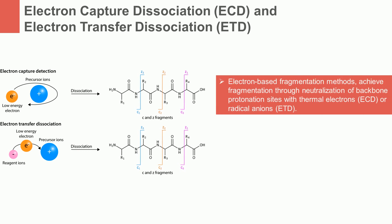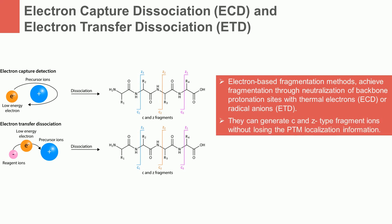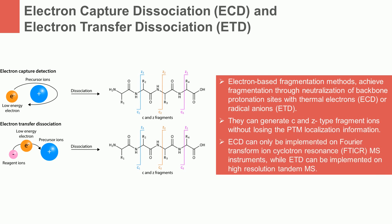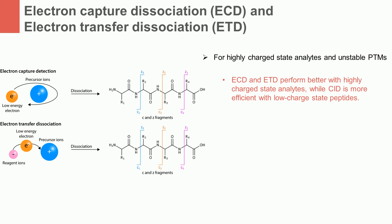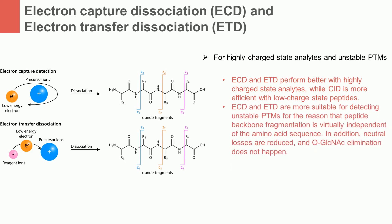ECD and ETD, electron-based fragmentation methods, achieve fragmentation through neutralization of backbone protonation sites with thermal electrons or radical anions. In this way, they can generate C- and Z-type fragment ions without losing the post-translational modifications localization information. ECD can only be implemented on Fourier Transform Ion Cyclotron Resonance mass spectrometry instruments, while ETD can be implemented on high-resolution tandem mass spectrometers. ECD and ETD perform better with highly charged state analytes, while CID is more efficient with low-charge state peptides. However, ECD and ETD are more suitable for detecting unstable post-translational modifications, for the reason that peptide backbone fragmentation is virtually independent of the amino acid sequence, neutral losses are reduced, and beta-elimination does not happen.